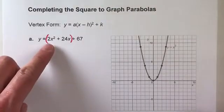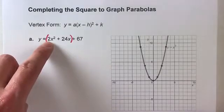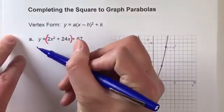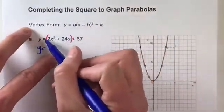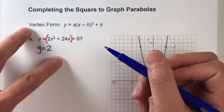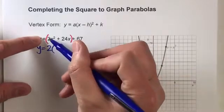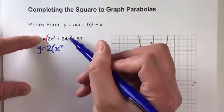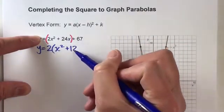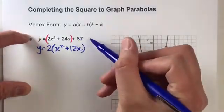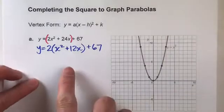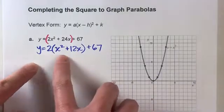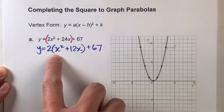Next step is I want to factor out the number in front of x squared. I want to get 2 on the outside of the parentheses. So I'm going to divide everything in here by 2 and put the 2 on the outside. 2 times what gets me 2x squared? x squared, because 2 times x squared gets me 2x squared. 2 times what gets me 24x? 2 times 12x gets me 24x. And then I'm going to drop down my plus 67. I basically just divided each of these terms by 2 so that it will be on the outside of the parentheses. And now I have x squared with a coefficient of 1.